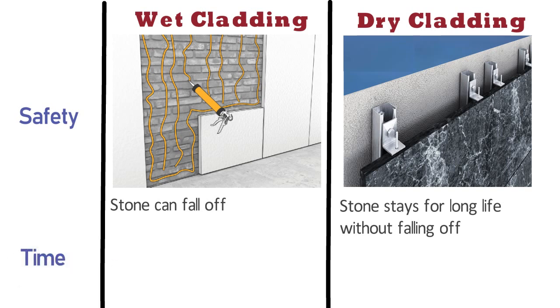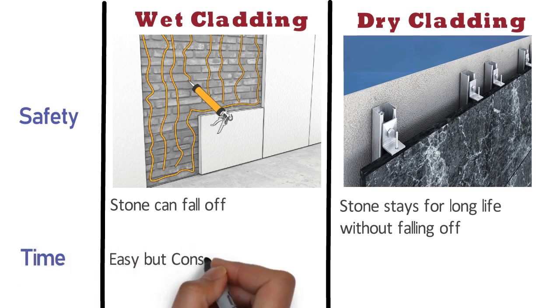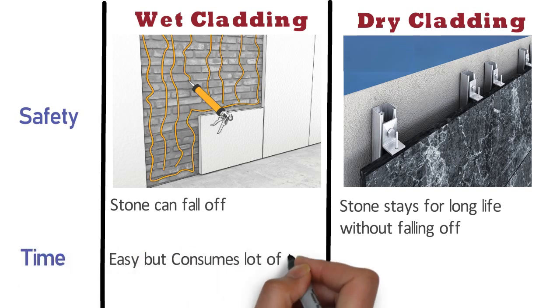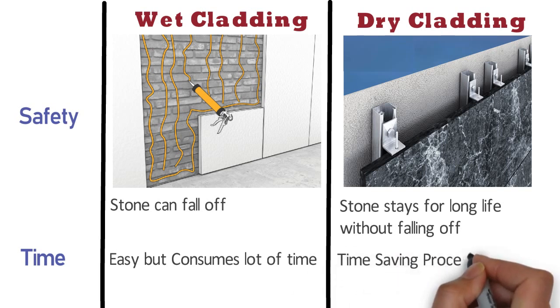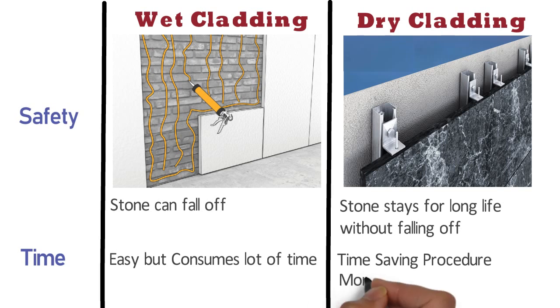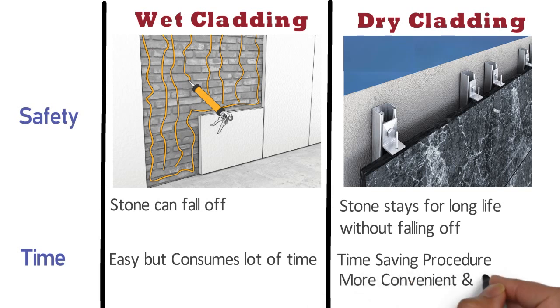Time: The wet cladding method is easy, but it consumes a lot of time. Whereas dry cladding is a time-saving procedure. Also, the installation of mechanical cladding can be more convenient and fast.